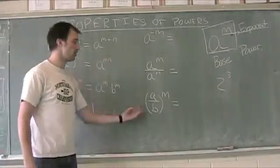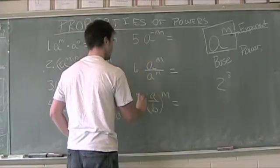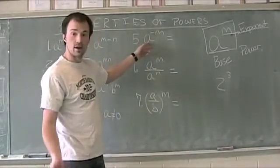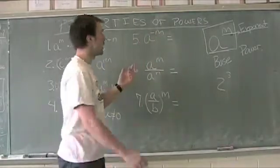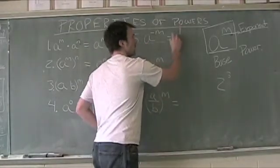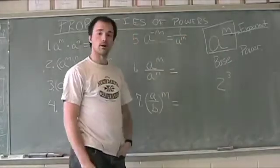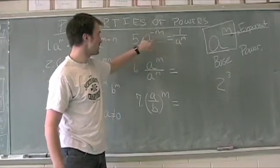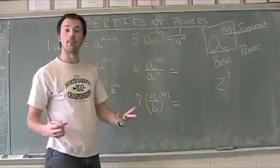Looking to the next side of the board, properties five, six, and seven. Now when we have a, the base, to a negative exponent, the negative exponent power property says that we will make this one divided by a to the m power. So negative exponents means that we have the reciprocal of what we see, or one divided by a to that positive power.